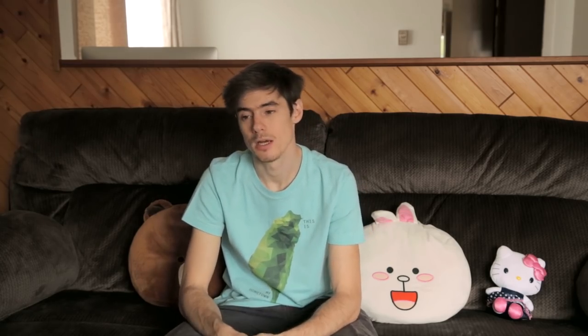For example, if I'm at a friend's house and I say 我要走, it means 'I gotta go.' It doesn't necessarily mean I want to go — it could mean I need to go. Like if my car's outside and the meter's time is up and I gotta go or else I get a ticket. So 我要走 can mean either 'I need to leave' or 'I want to leave' depending on context.